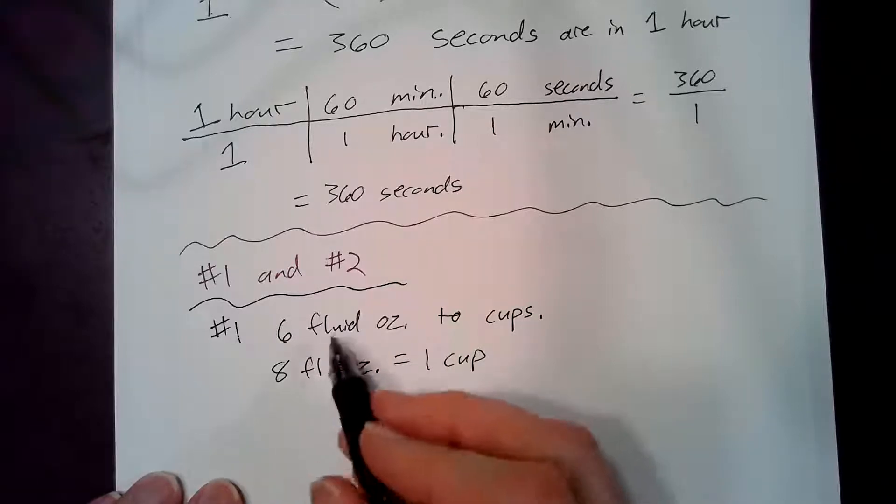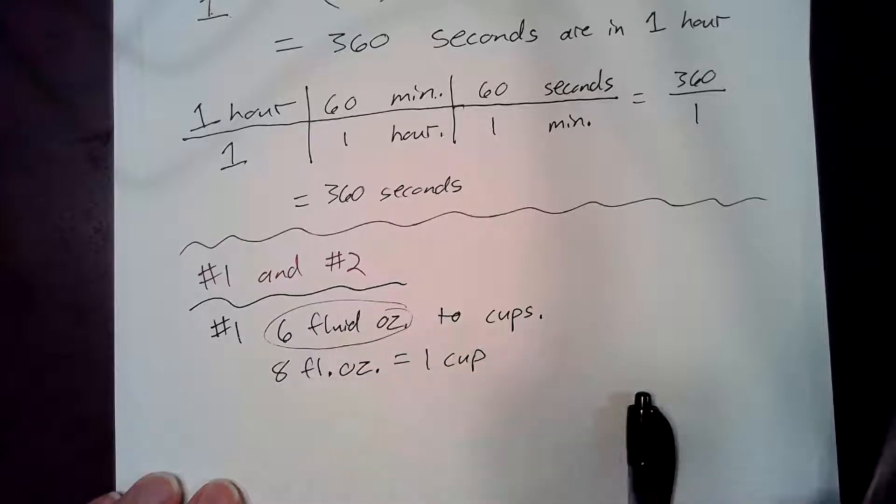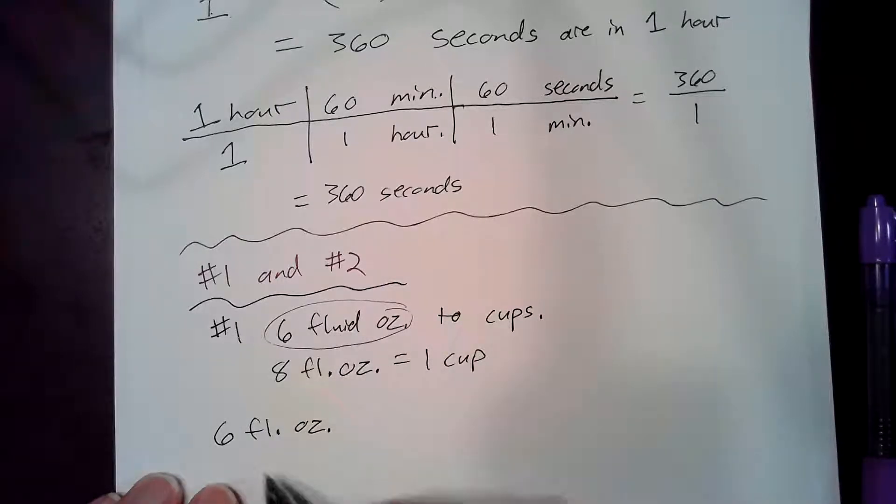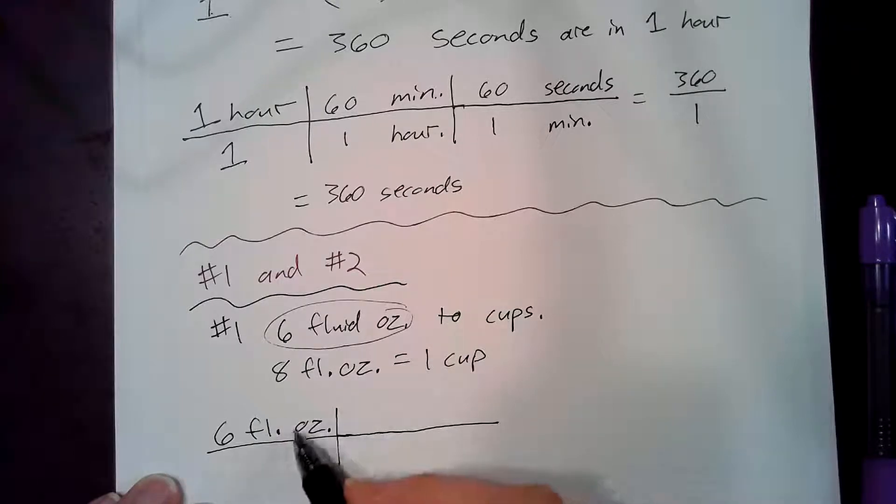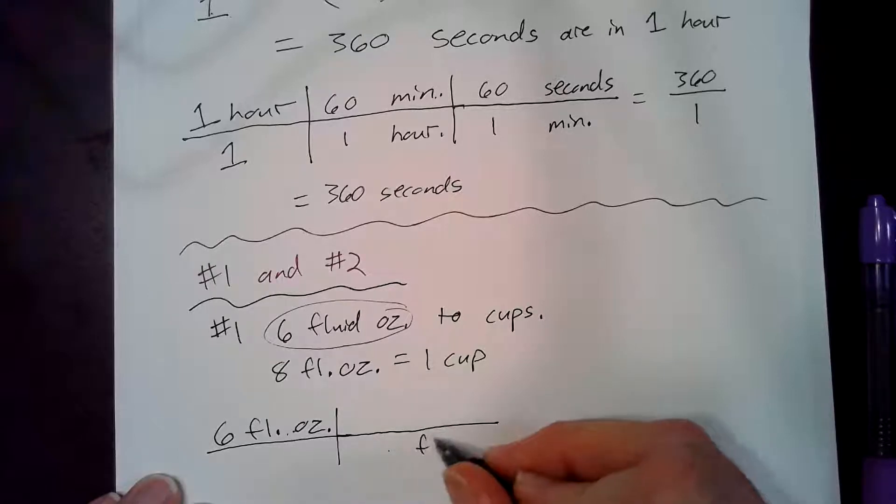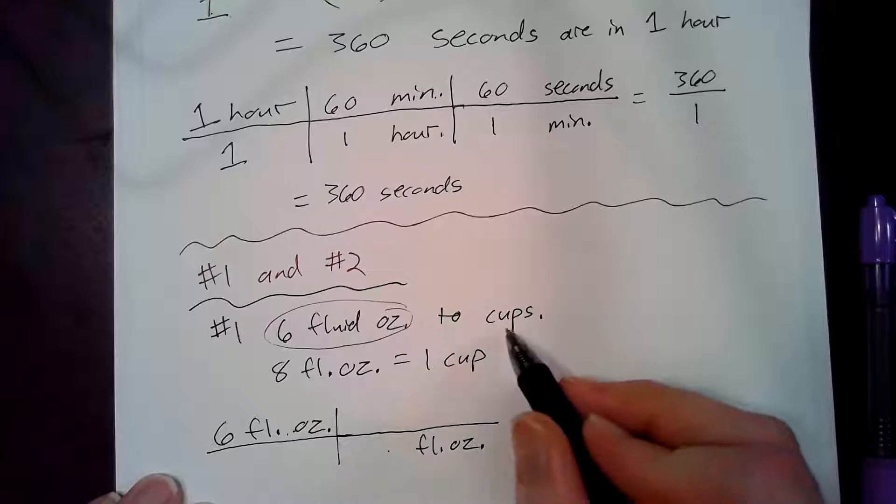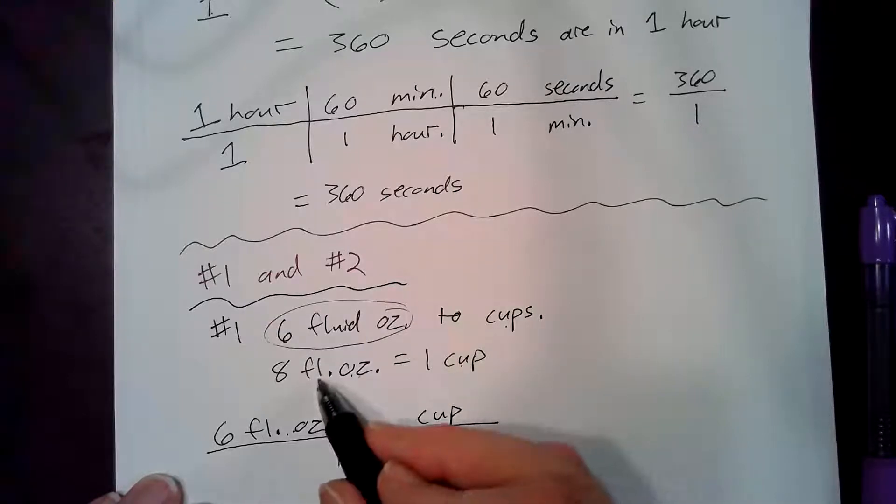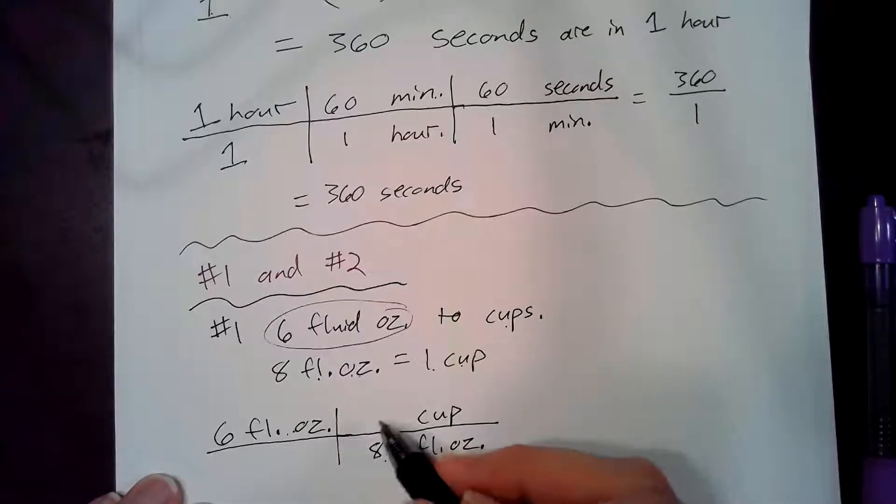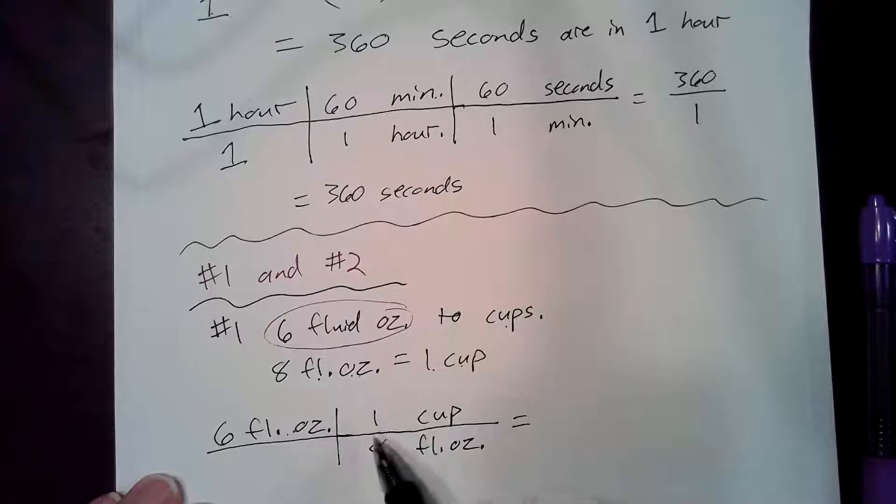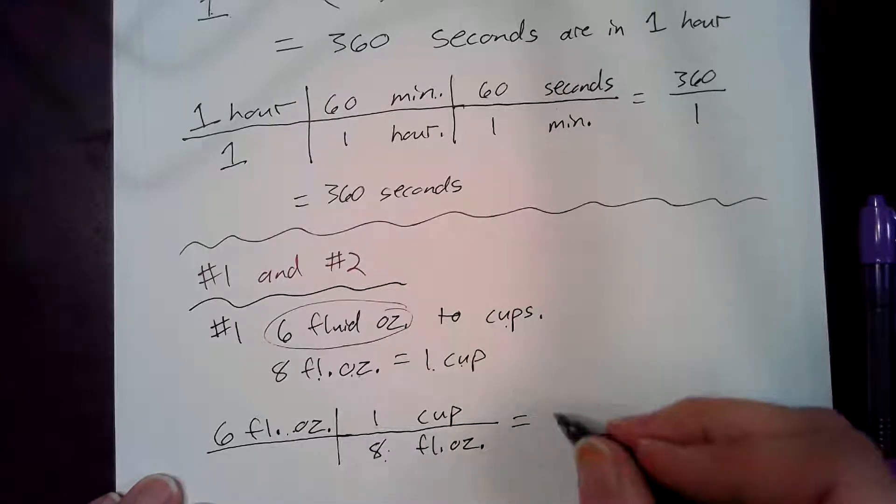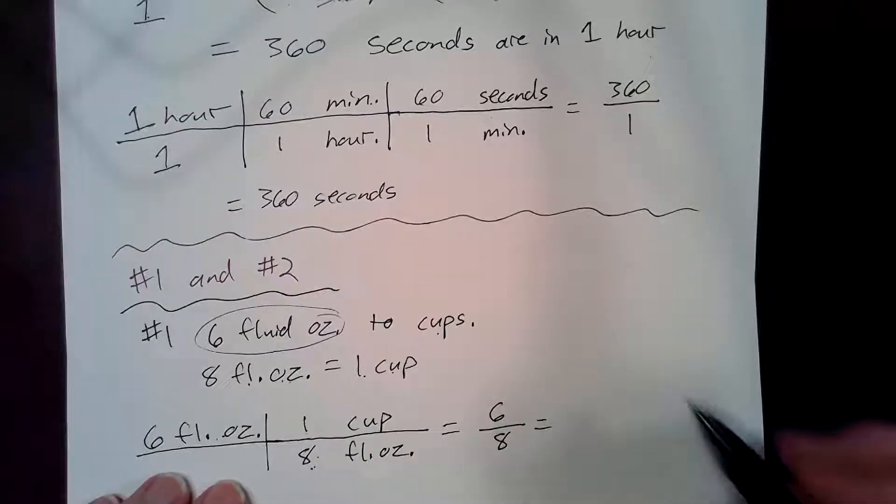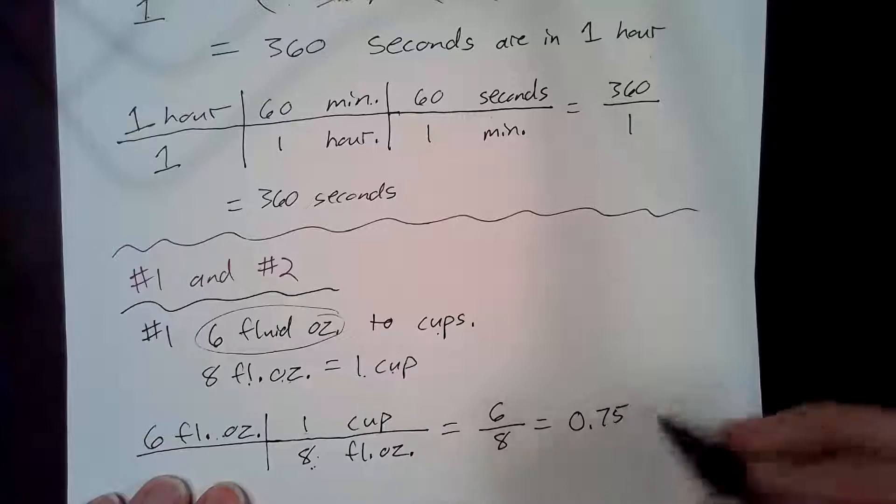So to start my railroad tracks I will first take my known information right here which will be six fluid ounces. That's my known information. And then I'll show my railroad tracks here. I'll take fluid ounces and put it on bottom and then I'll put cups where I want to go to on here because I only have one conversion fluid ounces to cups. There are eight fluid ounces in one cup and then I'm left with the mathematical example of six times one equals six divided by eight. So my answer will end up being if you type that into the calculator you get 0.75 cups.